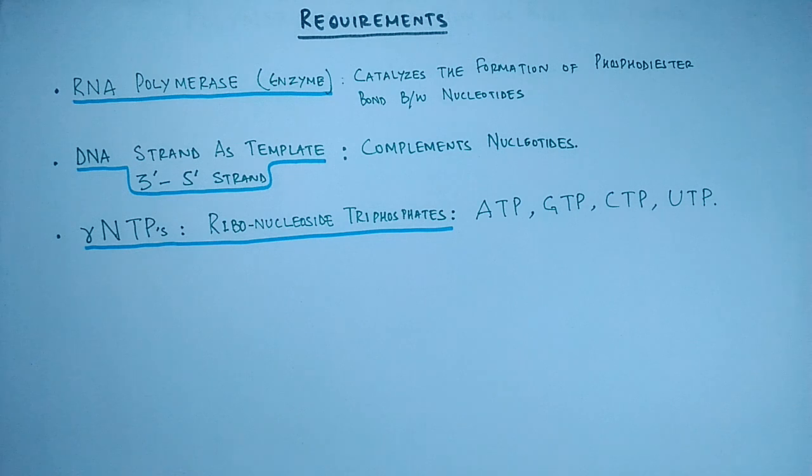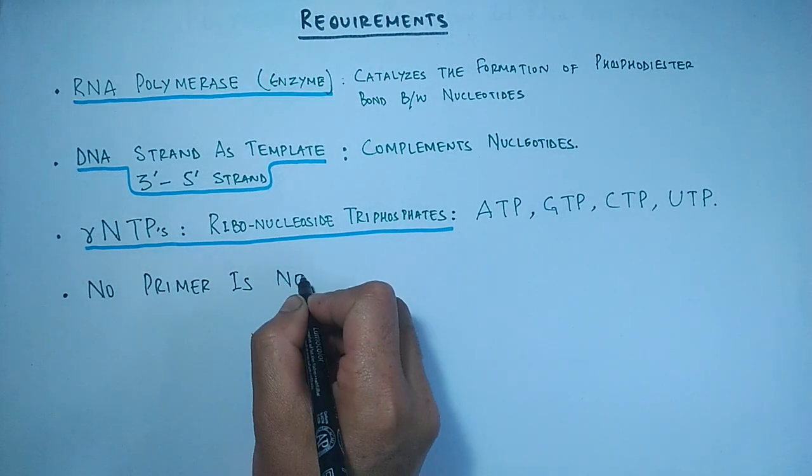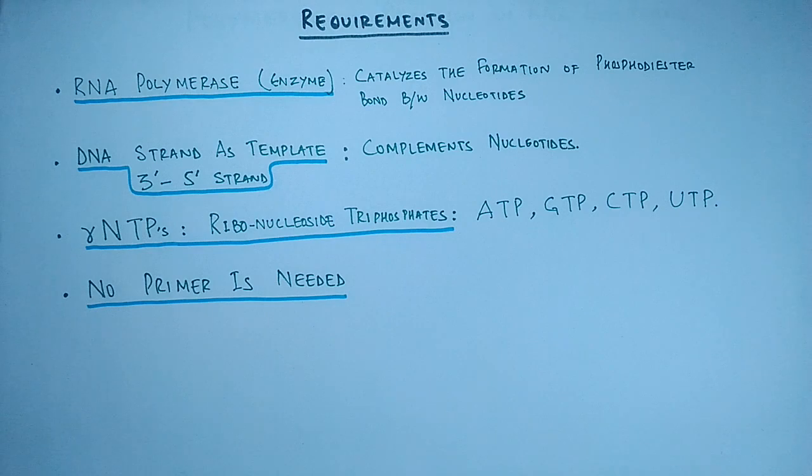For the process of transcription or RNA synthesis we need ATP, that's energy. We get energy for transcription from triphosphates when the phosphoanhydride bond breaks between phosphates. For RNA synthesis we do not need any primer to proceed the process. So these are the requirements.